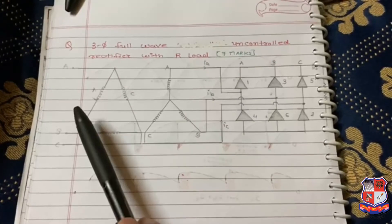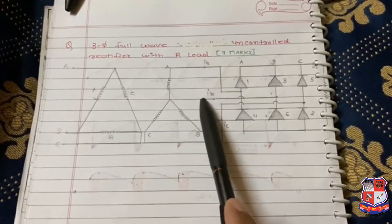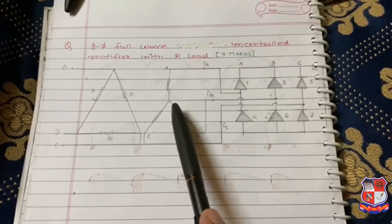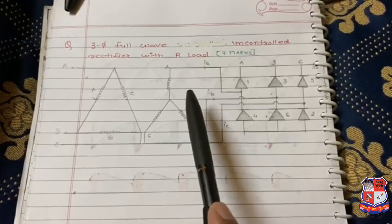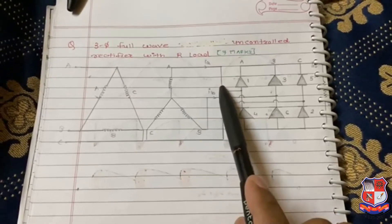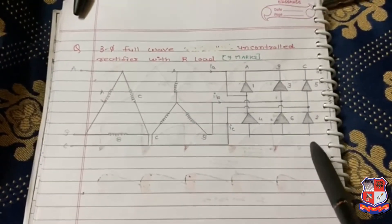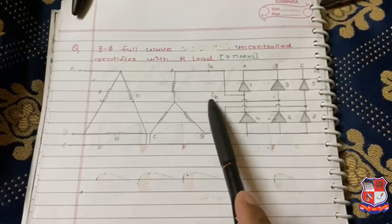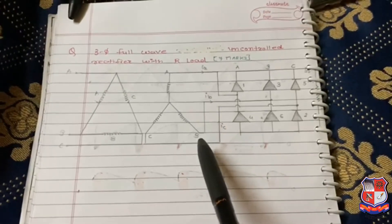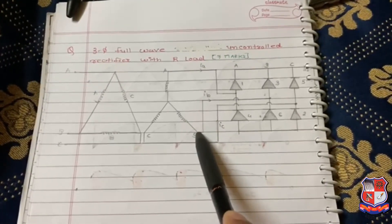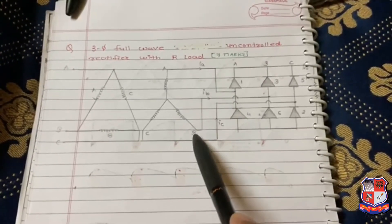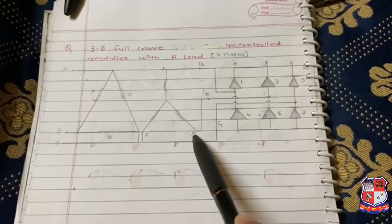This is a simple delta-star transformer. This is our primary side, this is our secondary side. We can easily differentiate that in full wave, the voltage across load will be the voltage between A and B. So the voltage across this load is VAB, which is called line voltage.